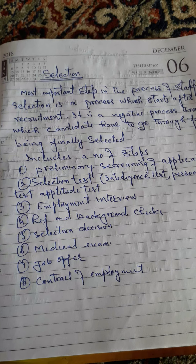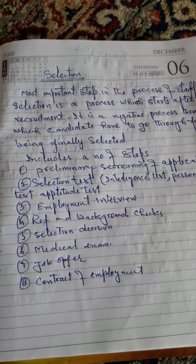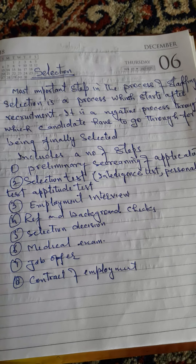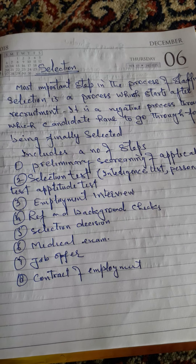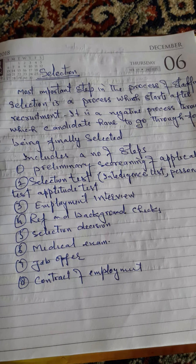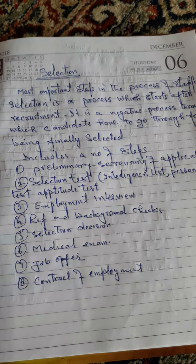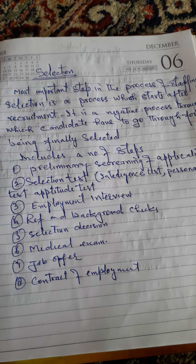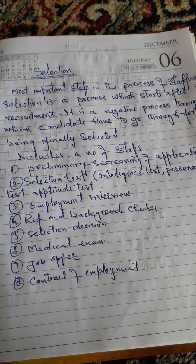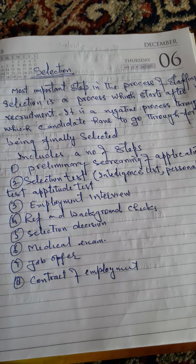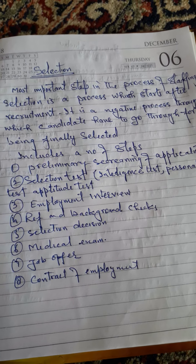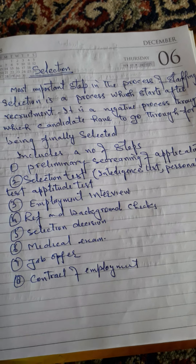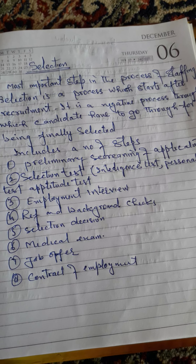The second step is the selection test. The remaining candidates have to go through a selection test, which includes an intelligence test, personality test, and aptitude test — a written examination is conducted. The candidates who qualify the test have to go through further steps, while those who do not qualify are shown the door. So again, this is a negative process.